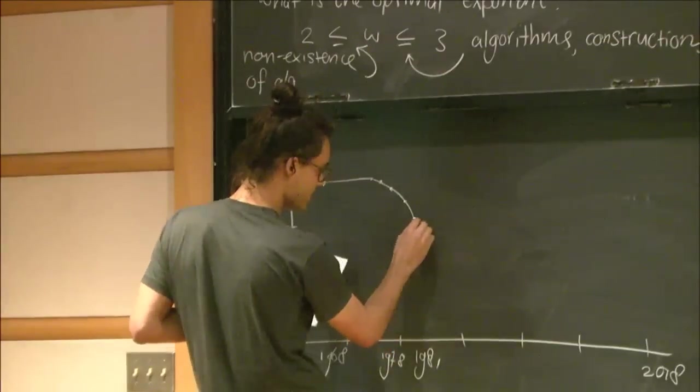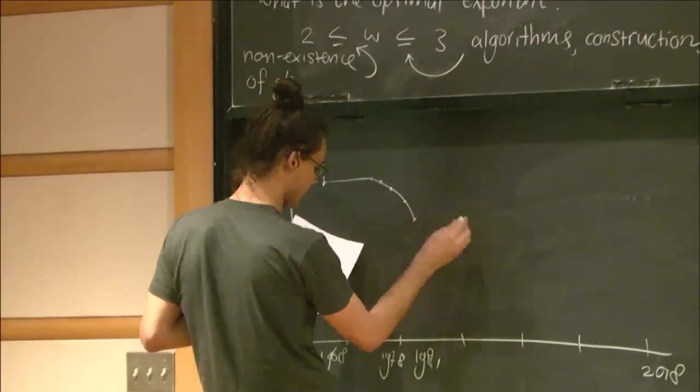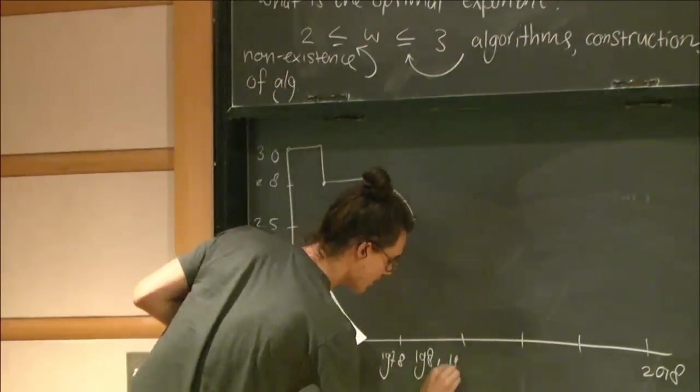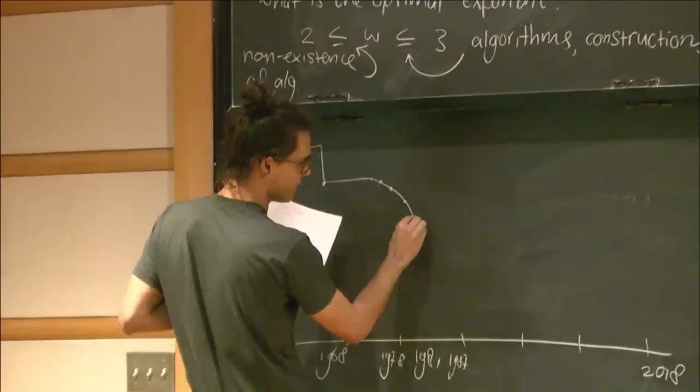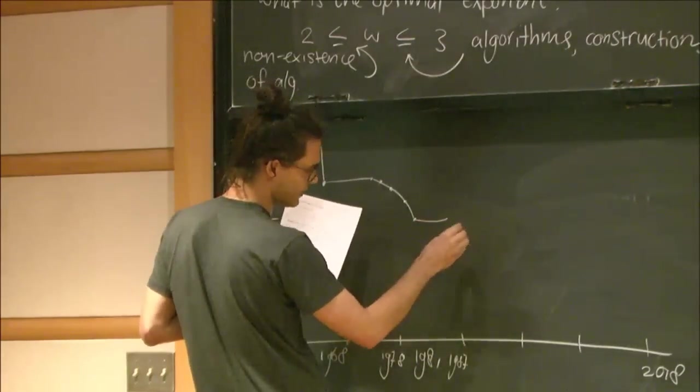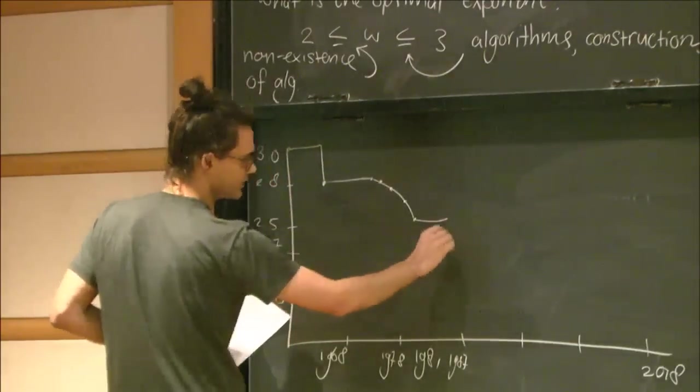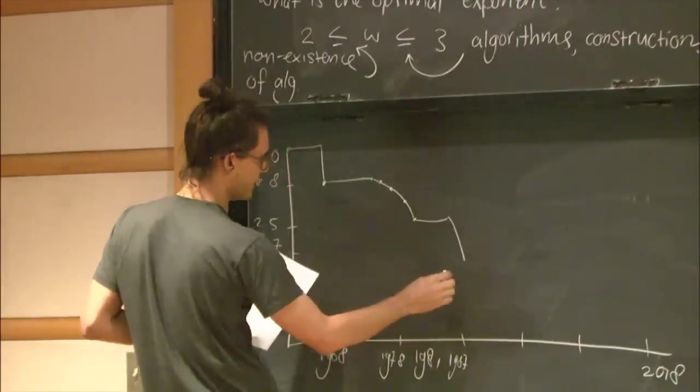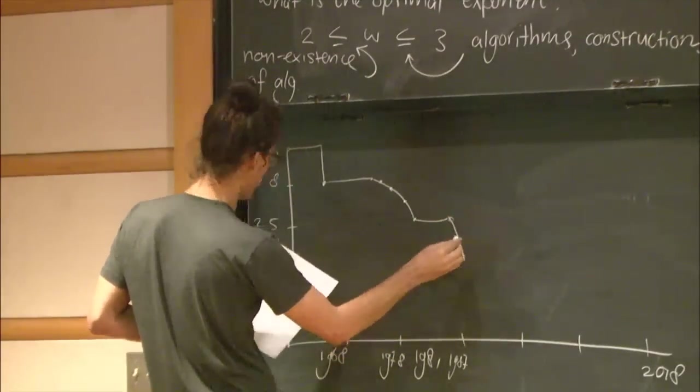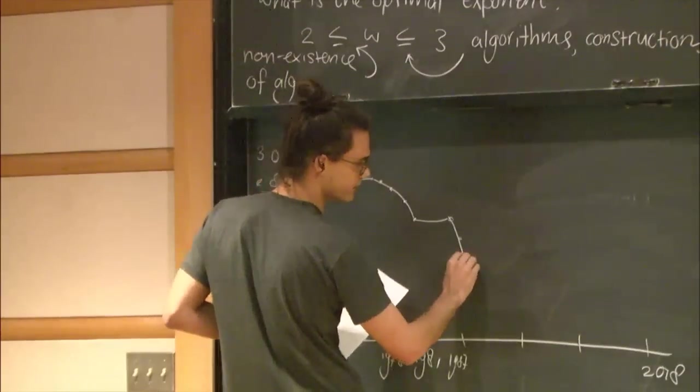And then again, not much happened until like 1987. And there, Strassen again, and Korpus and Wienergrat, they improved the bound down to like 2.37. And from there, so it roughly, so until now, it has roughly stayed at 2.37, up to some improvements in the further digits.